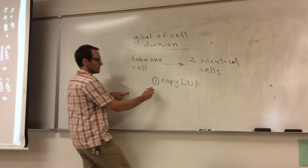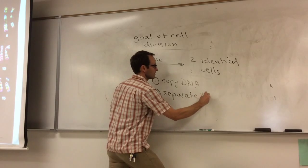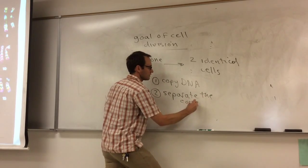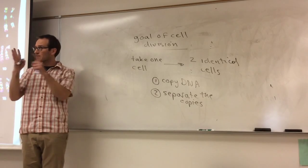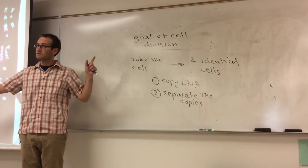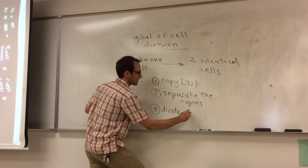Then you need to separate the copies. So you made the copies. Now you separate the copies. And then the third thing you do is you divide the cell.